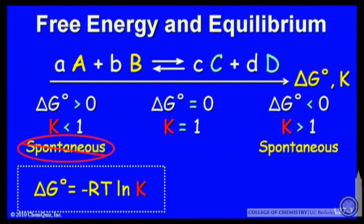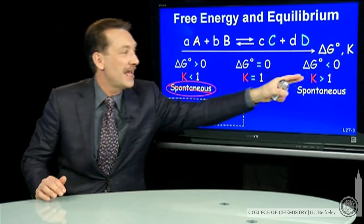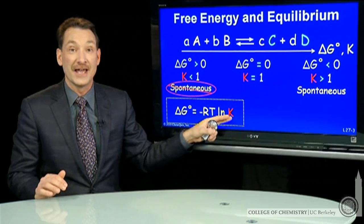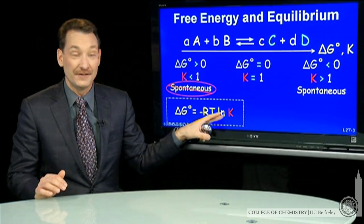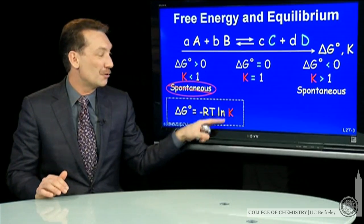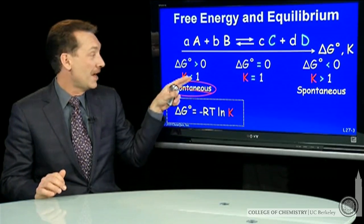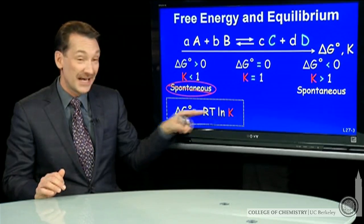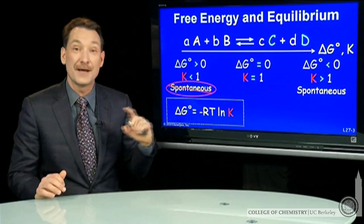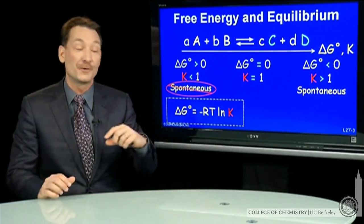In general, we have a relationship between delta G standard and K that we now intuitively understand. K less than 1 gives delta G greater than 0; K greater than 1 gives delta G less than 0. That behaves like a natural log function: if you take the natural log of K when K is greater than 1, that's positive — put a negative sign in front of that and you get negative delta G's. When K is a fraction less than 1, the natural log becomes negative; multiply by a negative and you get a positive delta G. The mathematical relationship is: delta G standard equals minus R times T times the natural log of K.